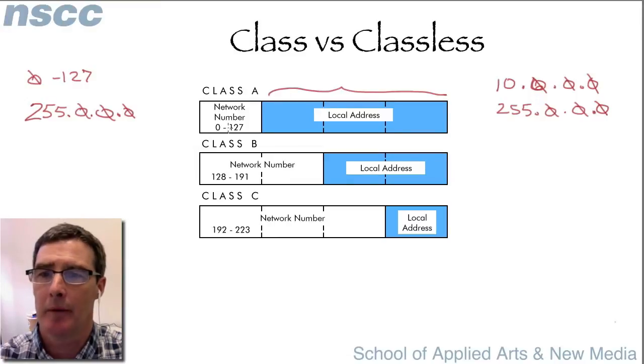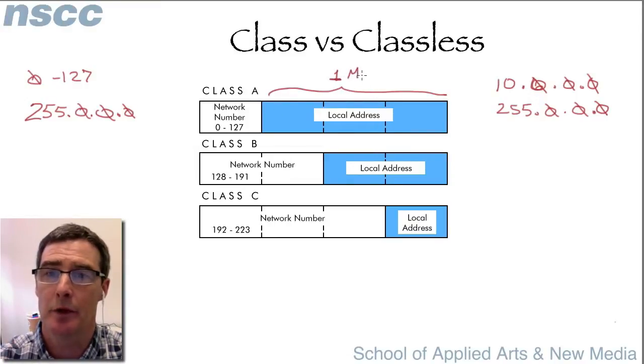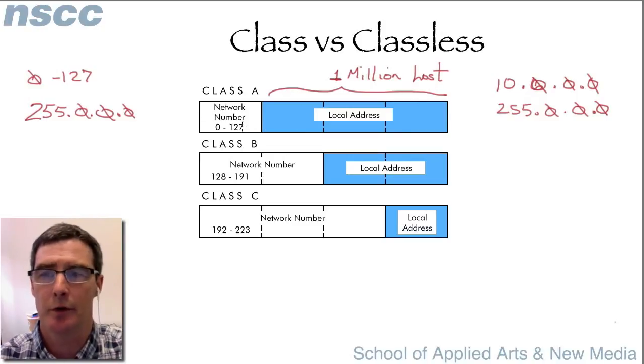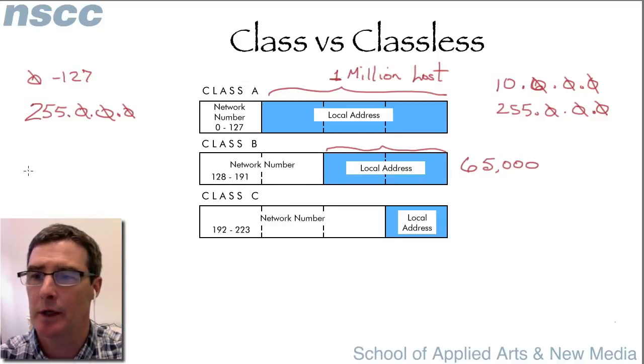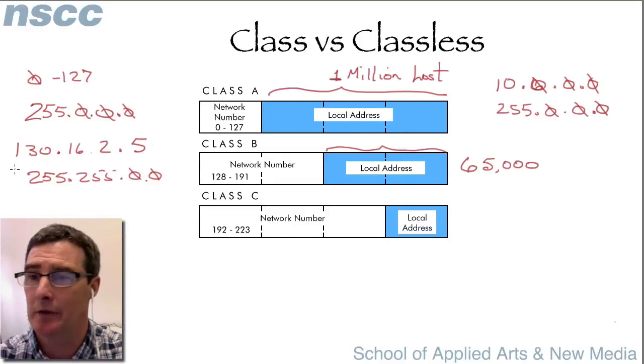Class B, so here you had actually up to a million hosts that you could have here. So these were reserved for very large organizations so they could request a class A address. Class B was a smaller number of hosts that we could have. We could have about 65,000 hosts in these networks. The first network number started with 128 to 191 and it used a network mask like that. So if you had an address which was 130.16.2.5, you would say that's a class B address and you might guess that the mask was as we see above here.